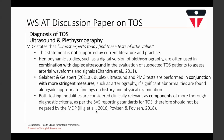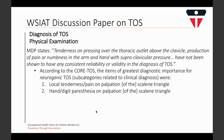The medical discussion paper states that tenderness on pressing over the thoracic outlet above the clavicle and production of pain or numbness in the arm and hand with supraclavicular pressure have not been shown to have any consistent reliability or validity in TOS diagnosis. However, according to CORE-TOS, out of over 100 items ranked for importance in establishing a clinical diagnosis of neurogenic TOS, local tenderness or pain on palpation in the scalene triangle area and hand or finger paresthesia following palpation of the scalene triangle were ranked first and second in importance.